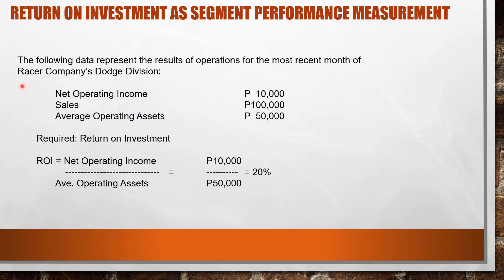Sample problem on computing return on investment: The following data represent the results of operations for the most recent month of RACER Company's Dodge Division — net operating income of $10,000, sales of $100,000, and average operating assets of $50,000. Required: return on investment. Substituting the figures into the formula, ROI equals net operating income of $10,000 divided by average operating assets of $50,000, giving an ROI of 20%.